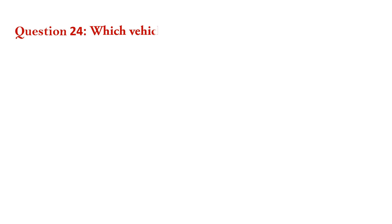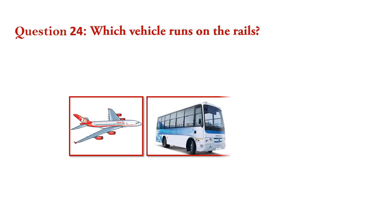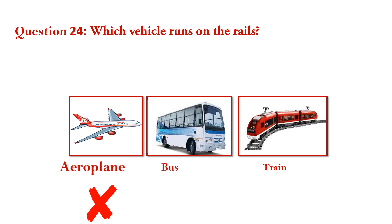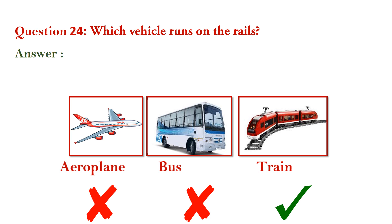Question number 24. Which vehicle runs on the rails? Aeroplane — wrong. Bus — wrong. Train — right. Answer is train.